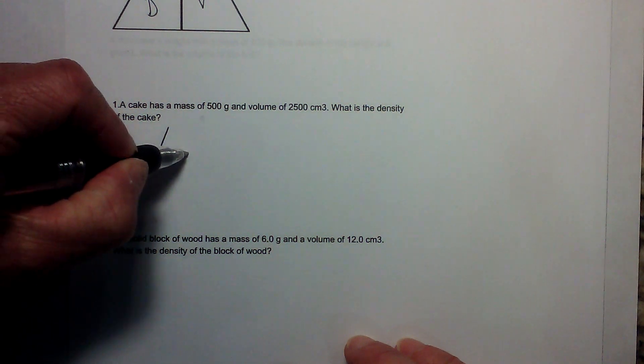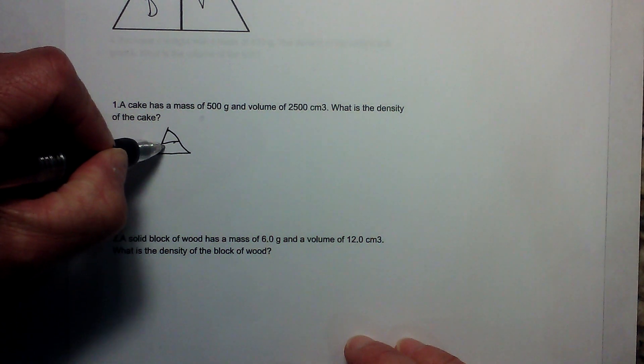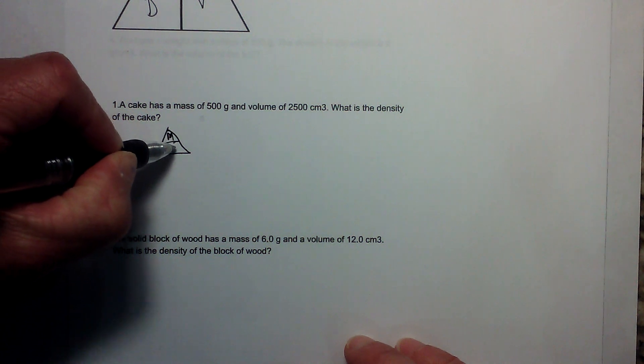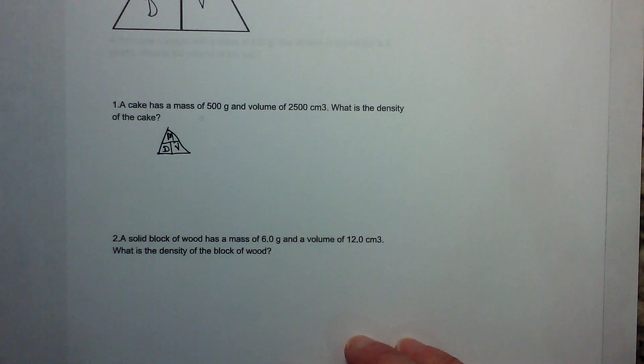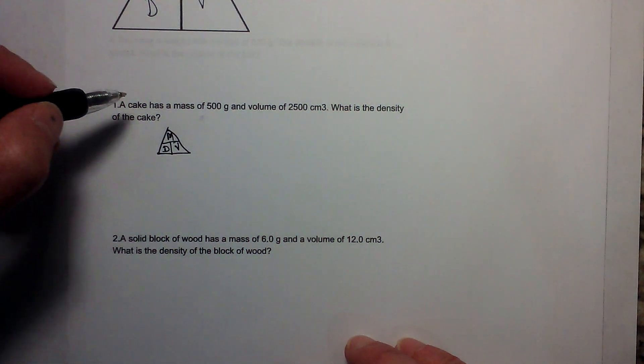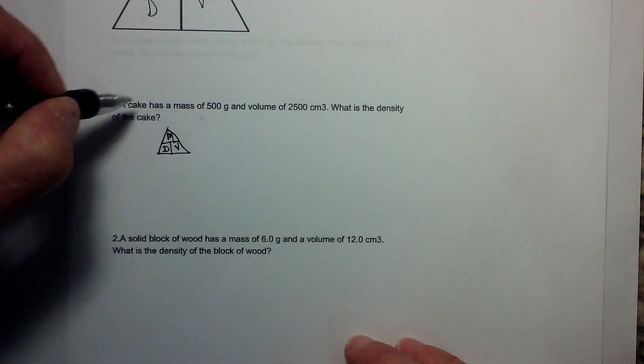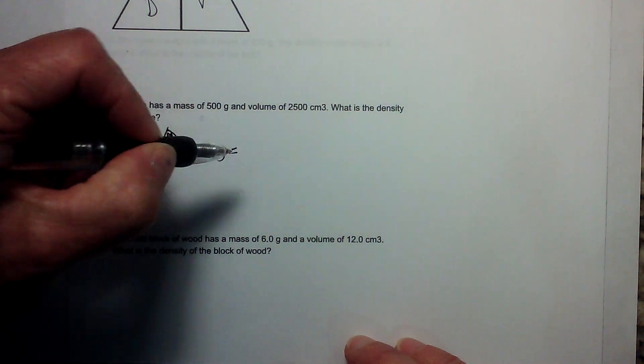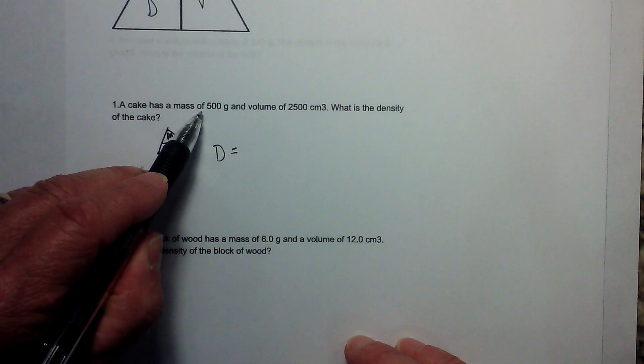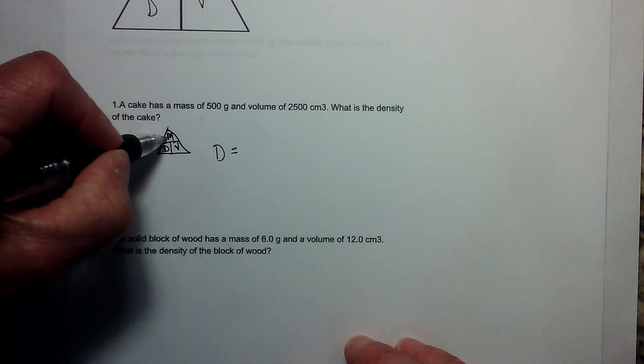In the first example I'm going to draw a very small triangle. Remember it's DMV. Let's see what we have. We're looking for density, we have the mass of 500 grams.